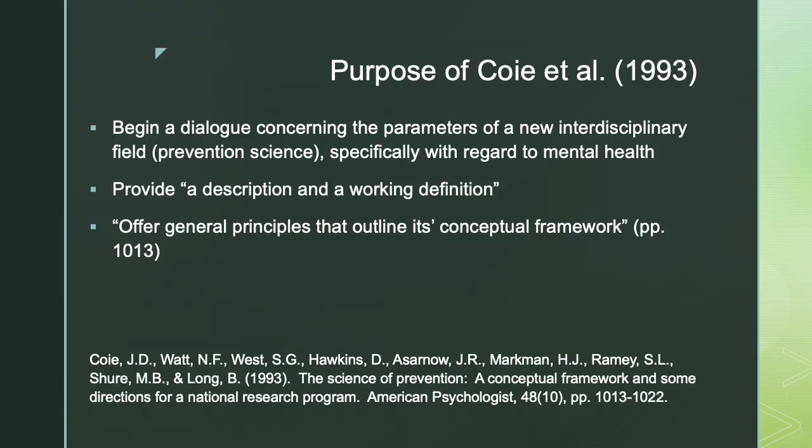The purpose of Coe et al. in 1993 was to begin a dialogue concerning the parameters and the frameworks for this new interdisciplinary field they were calling prevention science. Coe and colleagues were specifically interested in preventing mental health problems in adults, but what they were trying to put forward was a framework for prevention science that could be applied to a variety of human outcomes. In this document they provide a description and a working definition for us to consider and offer general principles which will outline their conceptual framework. Across these slides I've tried to use quotations when I took words directly from the text, but please refer to the original article for how they detail each of their impressions.